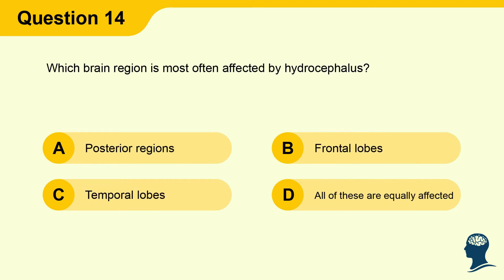Question 14: Which brain region is most often affected by hydrocephalus? A) Posterior regions, B) Frontal lobes, C) Temporal lobes, D) All of these are equally affected.